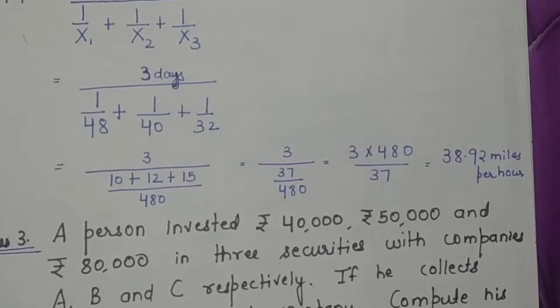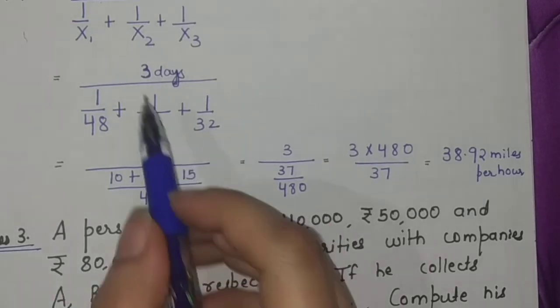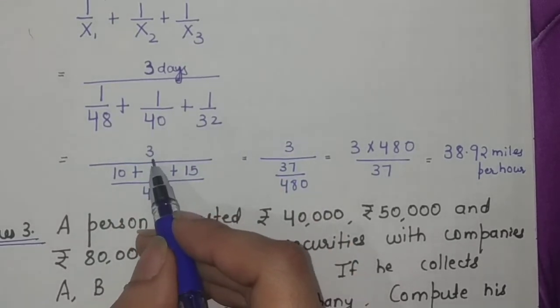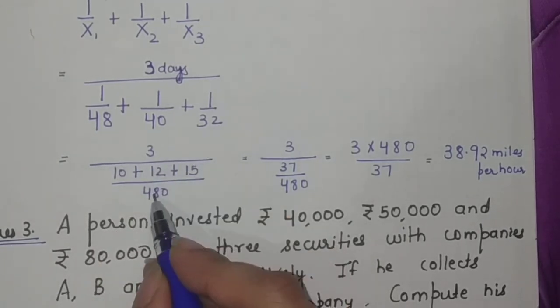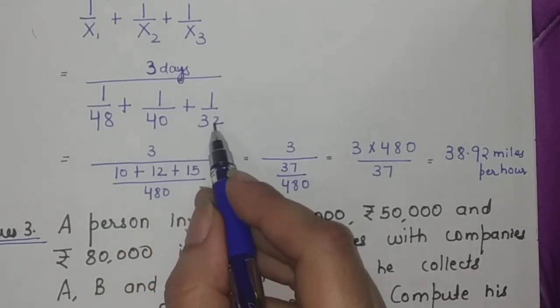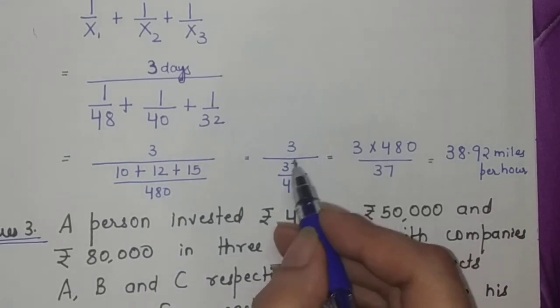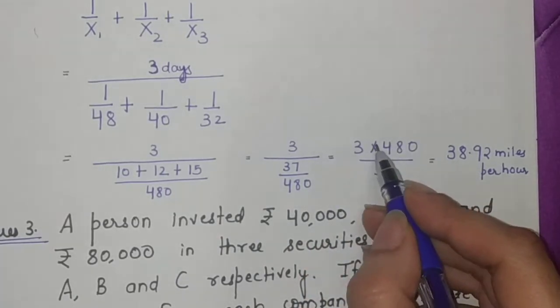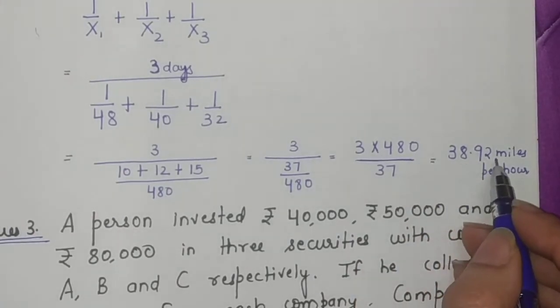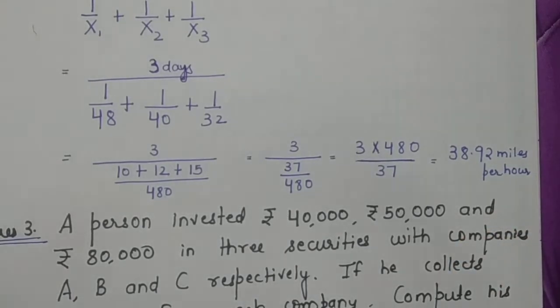Since 480 miles he drove every day, we use harmonic mean. If we solve this further, 3 will go in the numerator. In the denominator, 480 is the same, so 480 divided by 48 is 10, 480 divided by 40 is 12, and 480 divided by 32 is 15. I add them up, it will become 37. So 37 upon 480 is in the denominator. I'll reverse it - 480 will go in the numerator and get multiplied with 3, then the denominator we have 37. The answer will be 38.92 miles per hour.